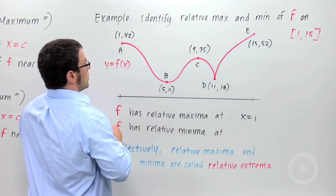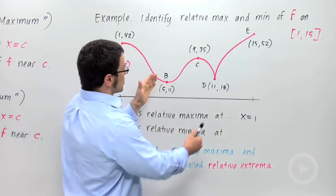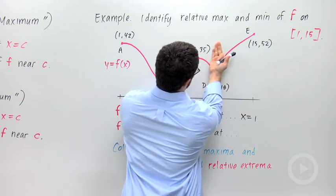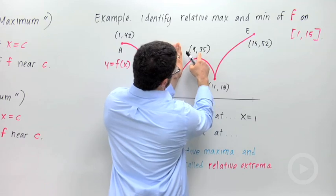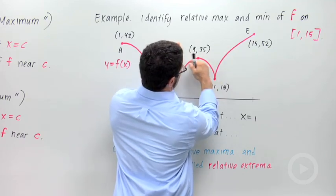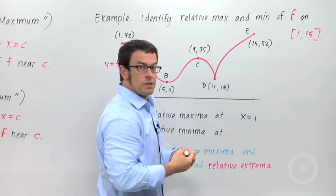And we can similarly go through and look for the other relative maxima. There's one right here. Just cover the rest of the graph with your hands and notice that in this little interval here, 35 is the highest point. 35 is the highest value that the function takes on. And so there's a relative maximum at x equals 9.